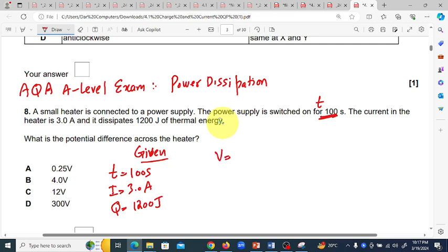We need to find the potential difference V. To find the potential difference, we use the formula P equals V multiplied by I, so V equals power divided by I. We know the current value is given, but the power is not given, so first we calculate the power.